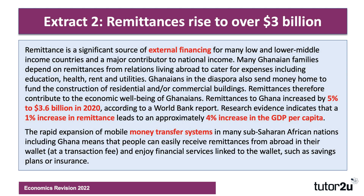Extract two is going to be crucial to this one. Remittances are a form of external finance for countries, along with private debt and equity flows, overseas aid, and FDI. Those are the four main sources of external finance.